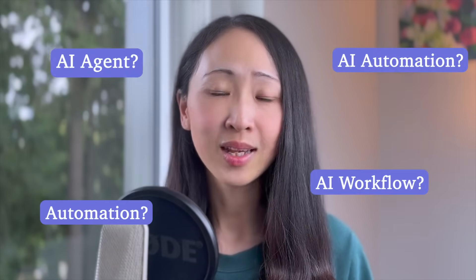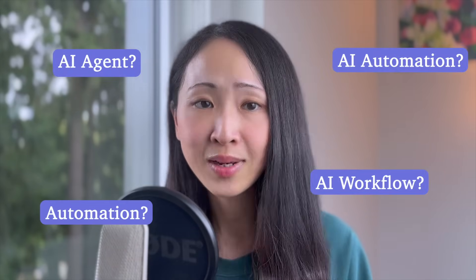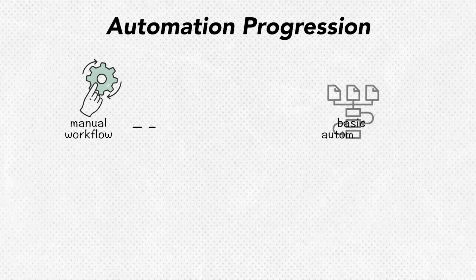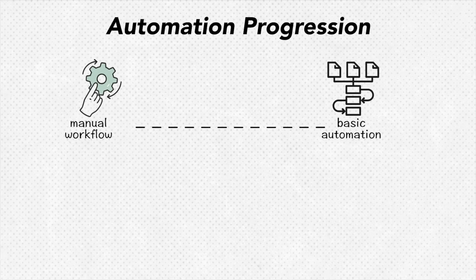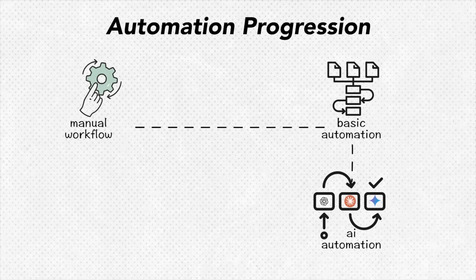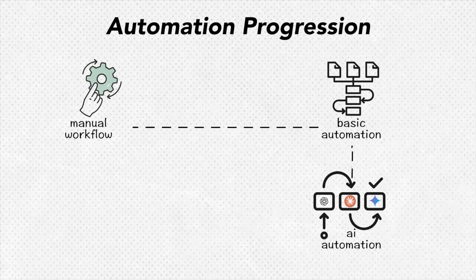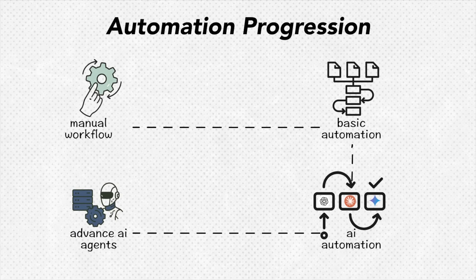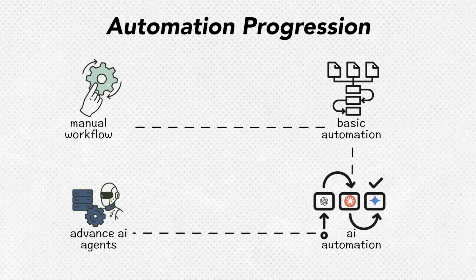This way you'll master the fundamentals before worrying about scaling. If you're confused about different terms in workflow automation, it can be viewed as a simple progression: manual workflow (mainly human-driven), basic automation without AI, then AI automation — an AI-enhanced automated workflow that uses AI models to add intelligence — and finally advanced AI agents that are highly adaptive with decision making.